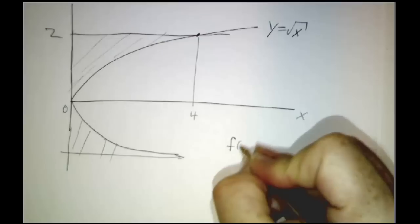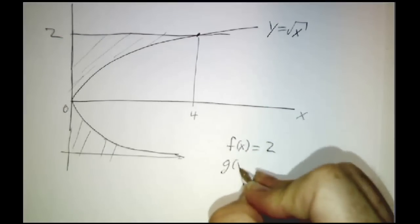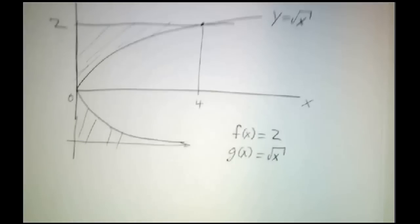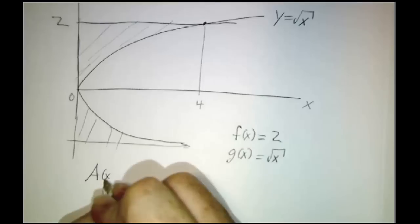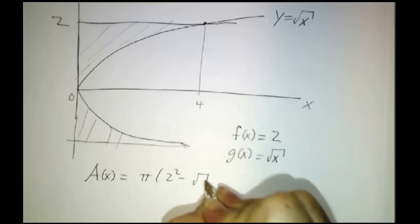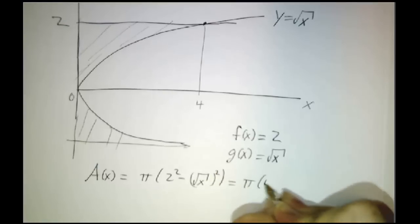So in this case, f of x, the outer radius, is 2. g of x, which is the inner radius, is square root of x. A of x is pi times 2 squared minus square root of x squared. So that's pi times 4 minus x.